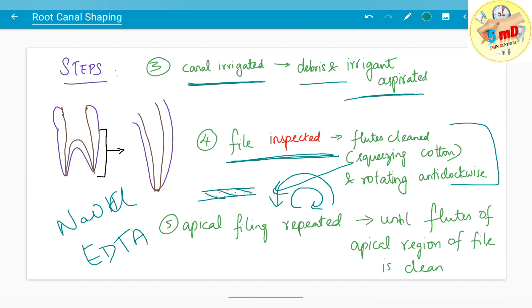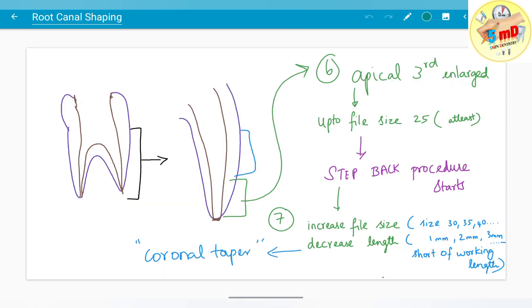Apical filing is repeated till the working length until binding is present, achieving a snug fit. Continue until the flutes of the apical region are clean and debris are removed. The apical third is enlarged up to file size 25 at least, after which step back is started.